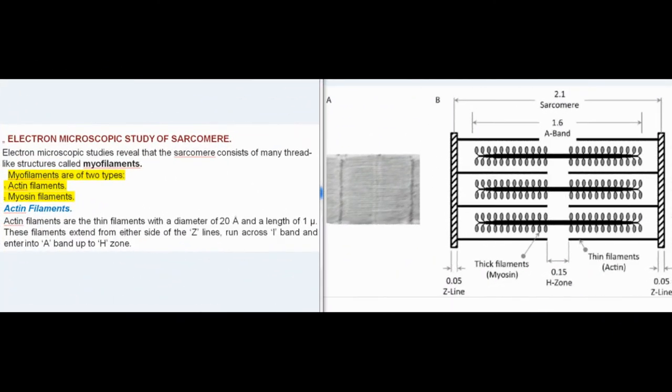Electron Microscopic Study of Sarcomere: Electron microscopic studies reveal that the sarcomere consists of many thread-like structures called myofilaments. Myofilaments are of two types: actin filaments and myosin filaments. Actin filaments are the thin filaments with a diameter of 20 angstroms and a length of 1 micron. These filaments extend from either side of the Z-lines, run across I-band and enter into A band up to H-zone.